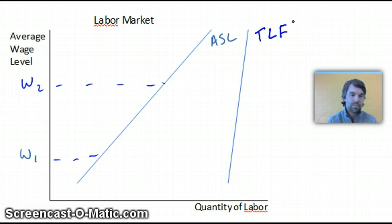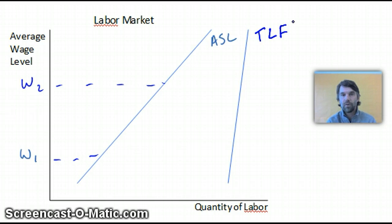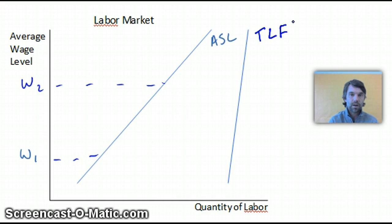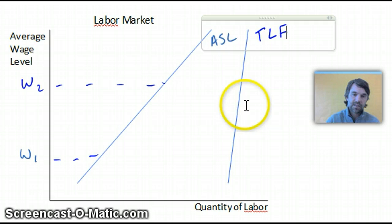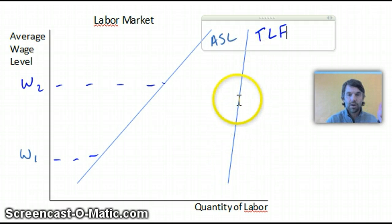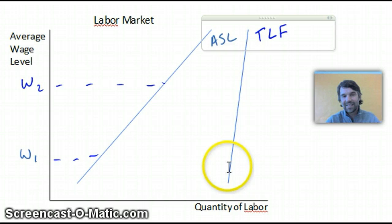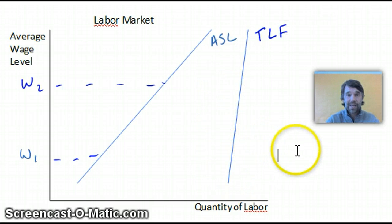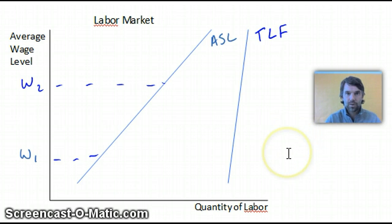If you're not actively seeking work, you're not part of the labor force. College students, people who work at home, house moms or house dads, retired people — all these people are not part of the labor force. But if you imagine retiring at 60 or 65 and wages go way up, you might be motivated to go back to work. That's why we see this positive slope of Total Labor Force, though it's not moving up much because wages would have to rise a great deal to bring retirees back to work.